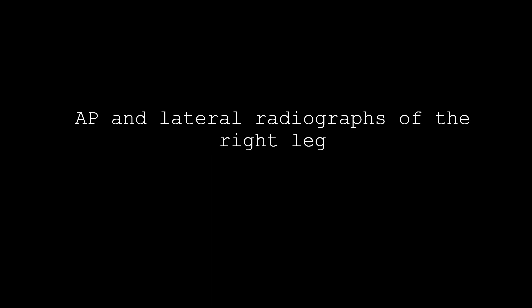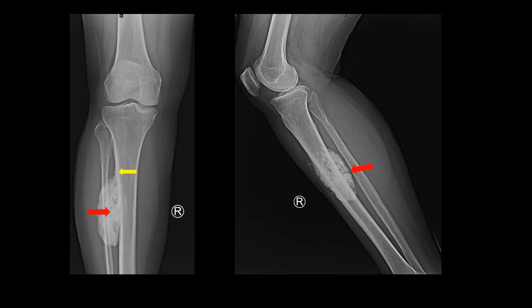AP and lateral radiographs of the right leg were done. These radiographs show a well-defined lobulated sclerotic lesion adjacent to the right mid-tibial diaphysis, as shown by the red arrow. This lesion shows dense sclerosis centrally as well as peripherally, along with adjacent cortical thickening as shown by the yellow arrow. There is no cortical destruction or periosteal reaction, which indicates that this lesion arises from the outer periosteal layer of the tibial diaphysis and not from the cortex per se.